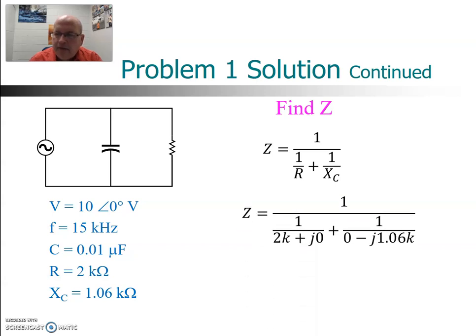Plug our values in, the resistance is 2k plus j is 0. Capacitive reactance 0 minus j 1.06 kiloohms. Do the reciprocal of the sum of the reciprocals. Remember to put parentheses around your complex numbers. You'll get a Z of 936 ohms and angle of minus 62.1. And we did that with reciprocal of the sum of reciprocals.